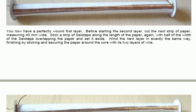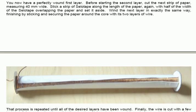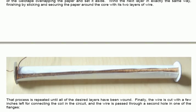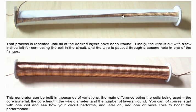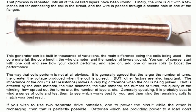Before starting the second layer, cut the next strip of paper, and make it 40mm wide. Stick a strip of sellotape along the length of the paper again, with half of the width of the sellotape overlapping the paper, and set it aside. Wind the next layer in exactly the same way, in the same direction, and finish it by securing the paper around the core, and sticking it with its sellotape again in this direction, around the coil itself. You repeat the process until all the layers that you decide to put in your coil have been wound. As we decided to use three layers, we don't need a third piece of paper. The second piece of paper lets us see how we are winding, to make sure that we are getting it neat. The arrangement here gives you what is a nicely wound three layer coil.